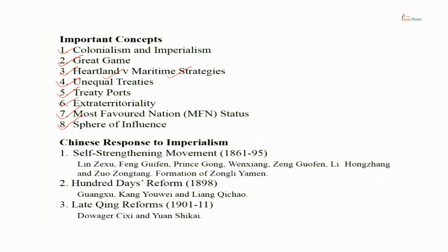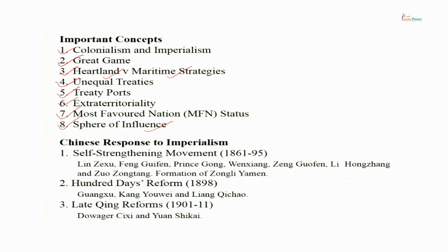Sphere of influence means that a particular area is not directly ruled by the great power, but whatever government it has is not completely independent — it is subject to the will of the great power. For example, Korea was under the sphere of influence of the Chinese empire until 1895, when China surrendered Korea to Japan; by 1910 Japan had annexed Korea completely. Indochina was under the Chinese sphere of influence until France brought it under their own sphere after the war with China. Tibet was the sphere of influence of the British.